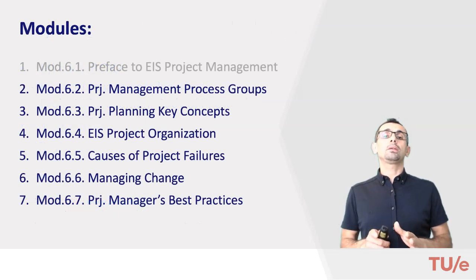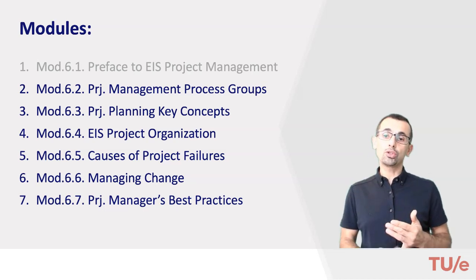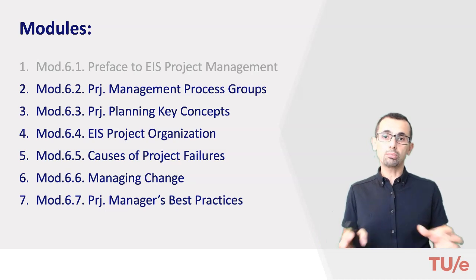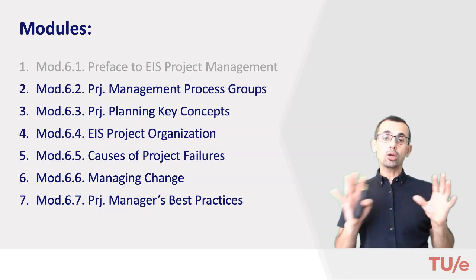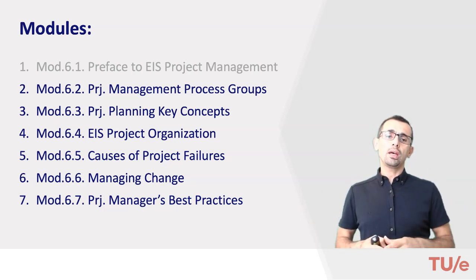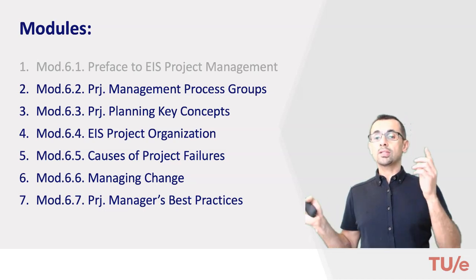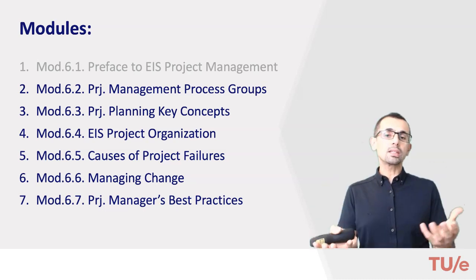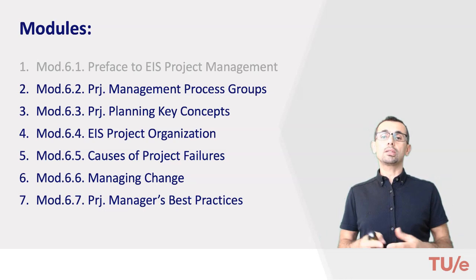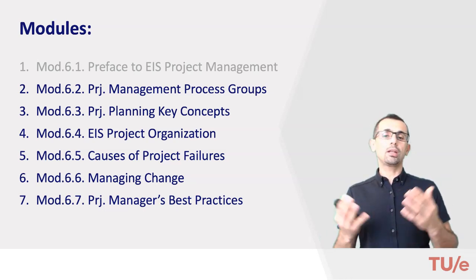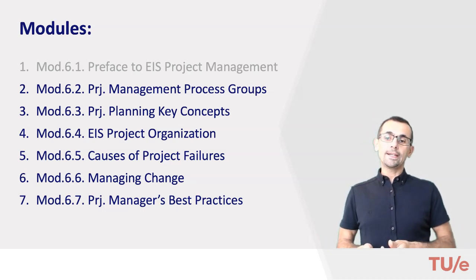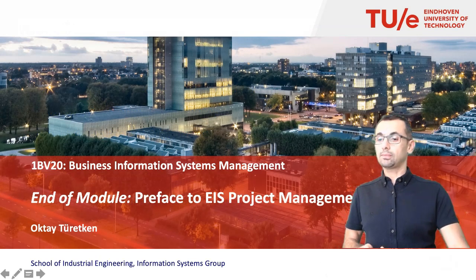Here's what we have in the remaining part of this video series. In the second module we'll talk about main project management processes based on PMBoK. In the third module we'll go over key concepts for project planning. The fourth covers how a typical project organization looks in enterprise system implementations. Next we'll discuss typical reasons why IS projects fail, then how to manage the change caused by enterprise system implementations, and finally some best practices of project managers.